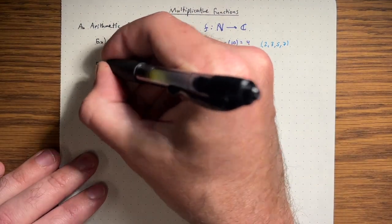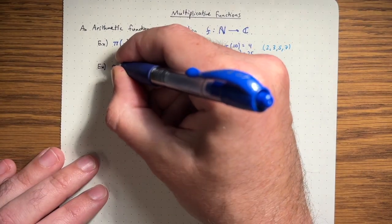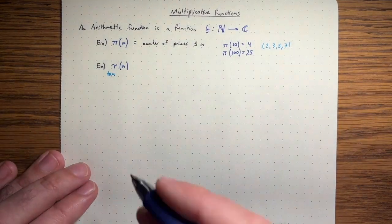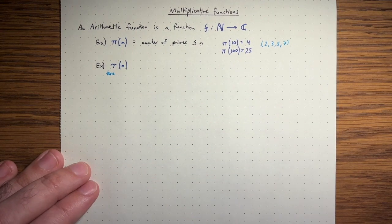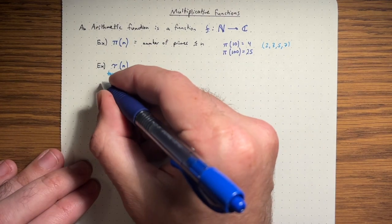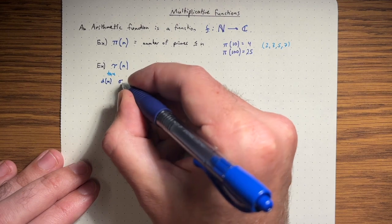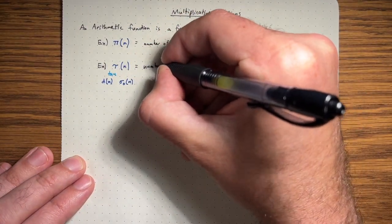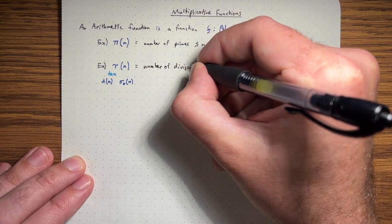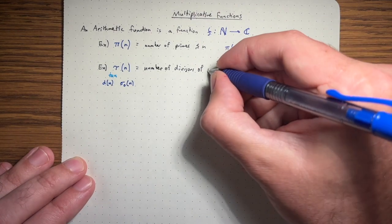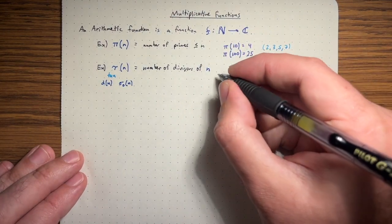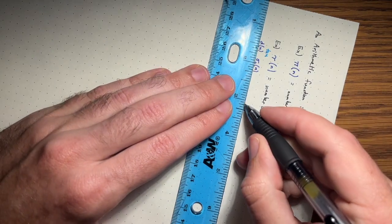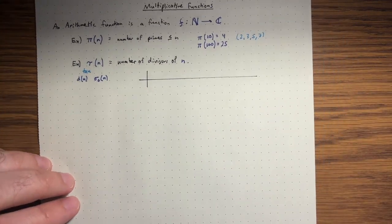Another example is the function that counts the divisors of a number, called tau of n — the Greek letter tau. This comes from the German word for divisor. It's also sometimes called d of n or sigma 0 of n. It just counts the number of divisors of n, and it's worth making a table because this function has some rather nice properties.